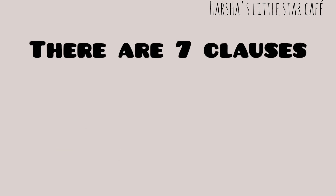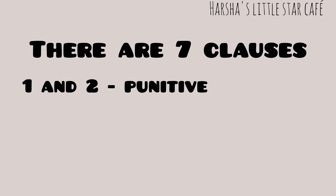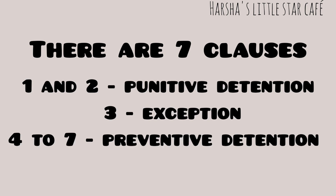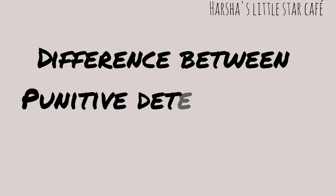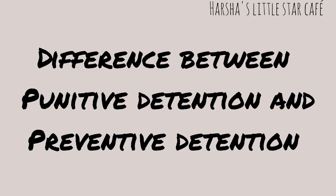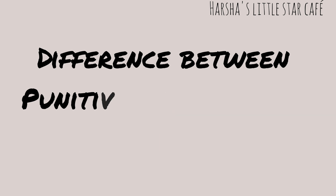There are a total of 7 clauses in Article 22. Clauses 1 and 2 are about punitive detention, clause 3 is about exceptions, and clauses 4 to 7 are about preventive detention. Before learning the 7 clauses, let us learn the difference between punitive and preventive arrest or detention.